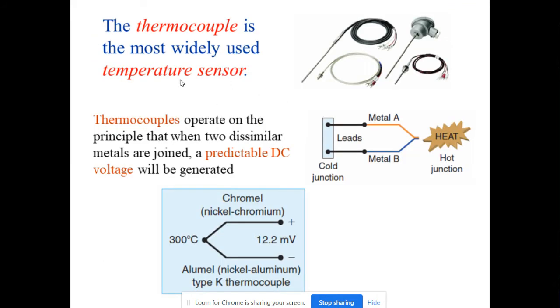Thermocouple, one type of temperature sensor. It has two types of dissimilar metals that we use. We can generate a predictable DC voltage and you can know what is the current temperature.